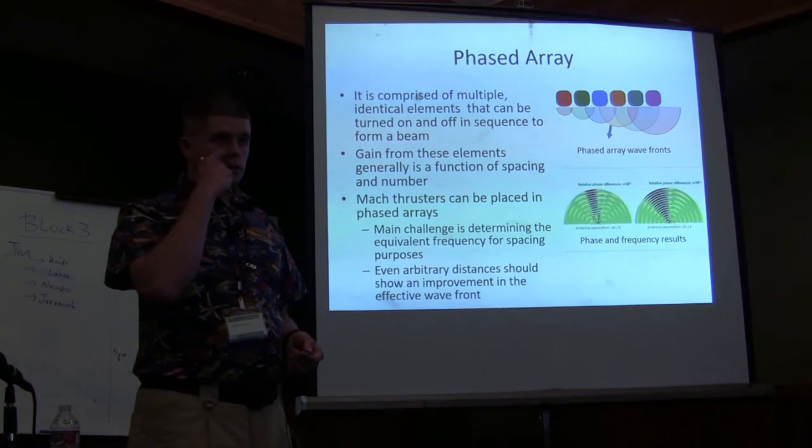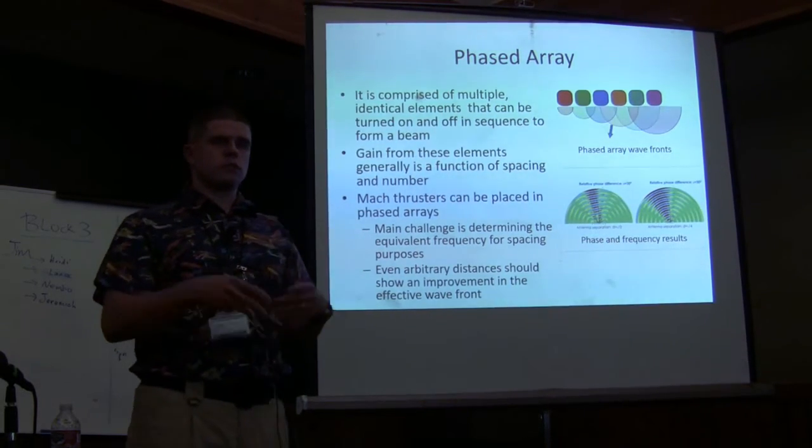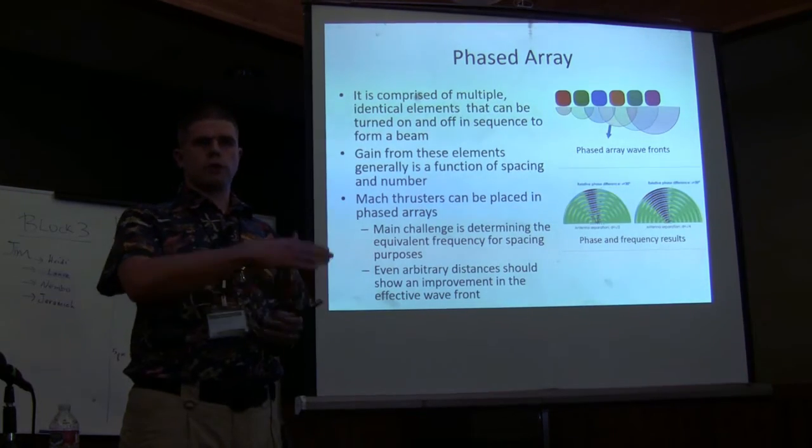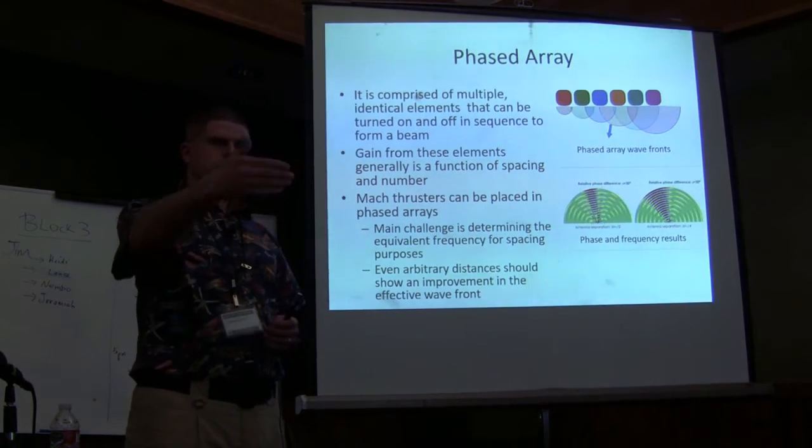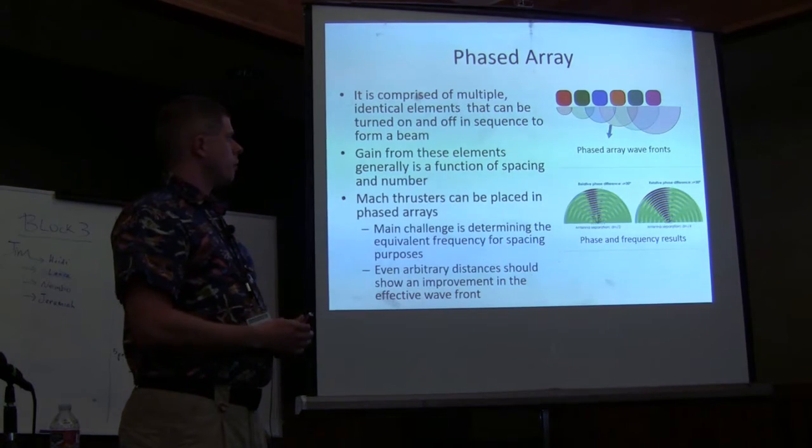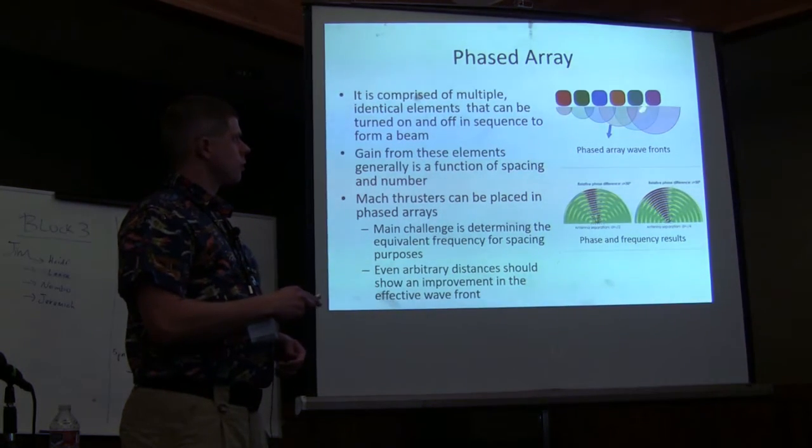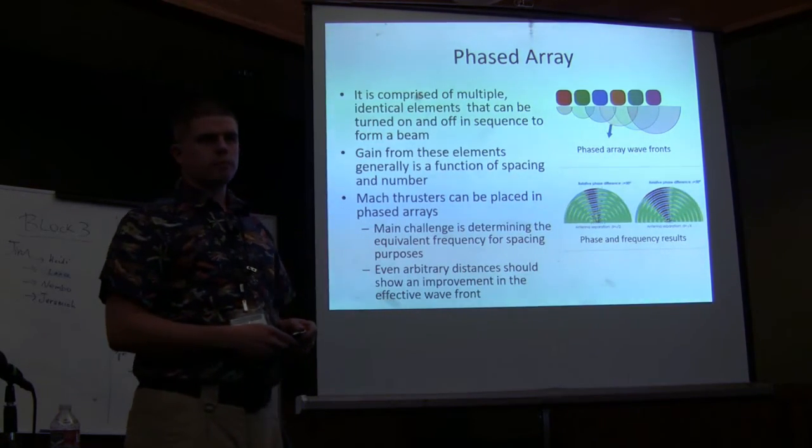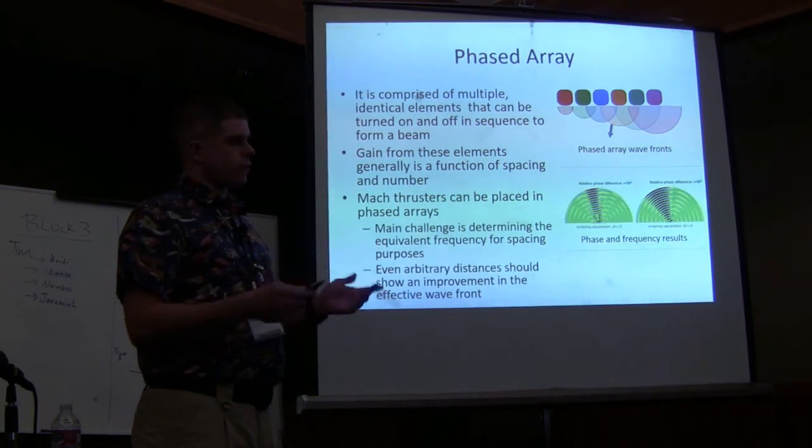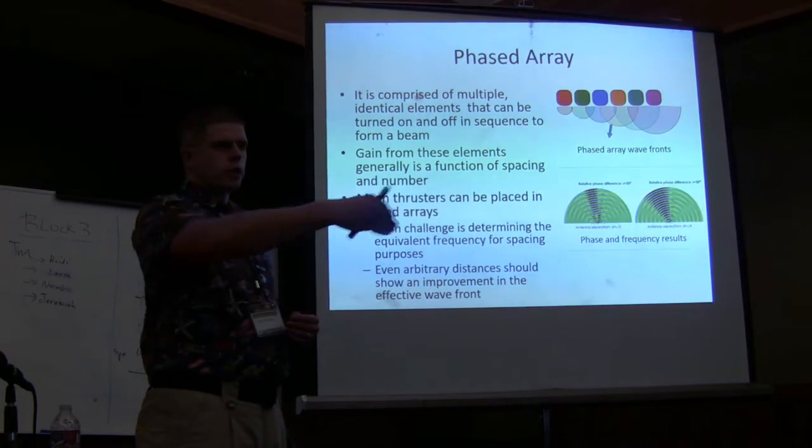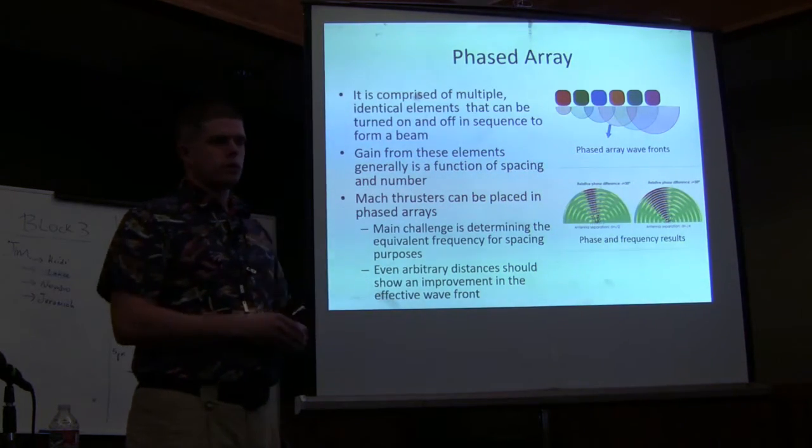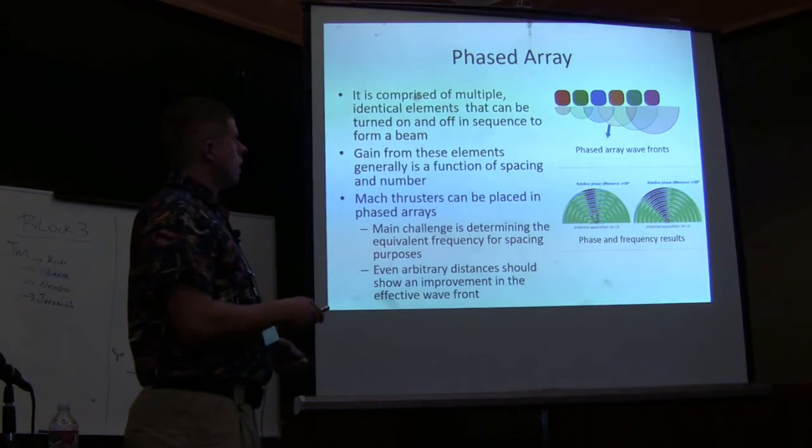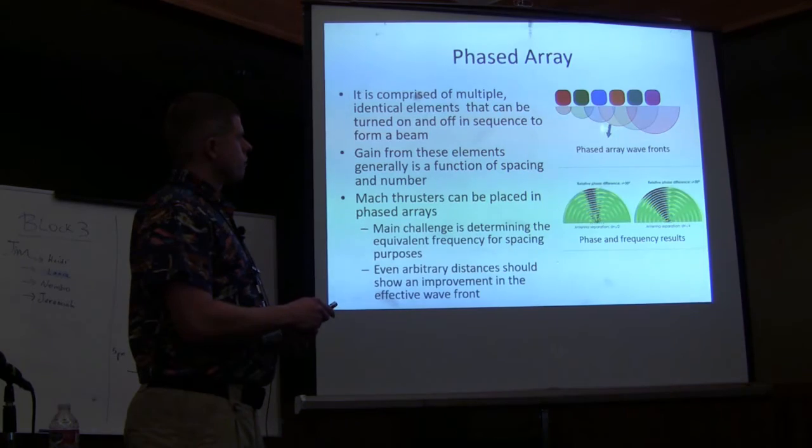For those who aren't familiar, a phased array is a collection of elements that are identical, that are timed to move a wave front off of the bore site, which is straight off the panel. I have an illustration over here, and these are just identical units, the color relates to the time. For the work I did, I'm just using a straight bore site, it's just going straight out. I wanted to see if I could kind of get it to work a little bit and to get a code set up.